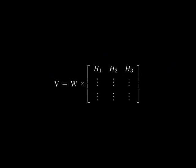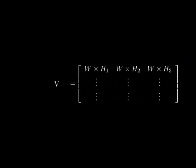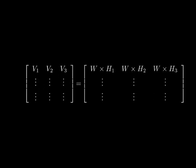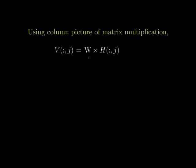From the column picture of matrix multiplication, each column of V can be written as a linear combination of the columns of W and H, with the columns of W acting as source components and the columns of H acting as encodings.